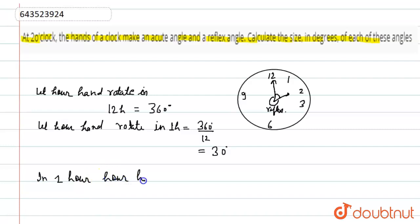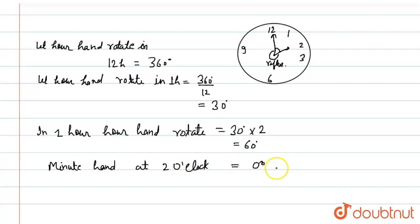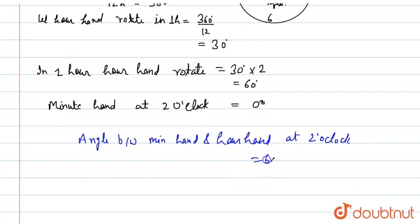Now, for the minute hand — the angle between the minute hand and the hour hand at 2 o'clock. The hour hand is at 2, which is 2 intervals of 30 degrees. This will be equal to 60 degrees. So the angle between the minute hand and the hour hand at 2 o'clock is 60 degrees. And now we find the reflex angle.